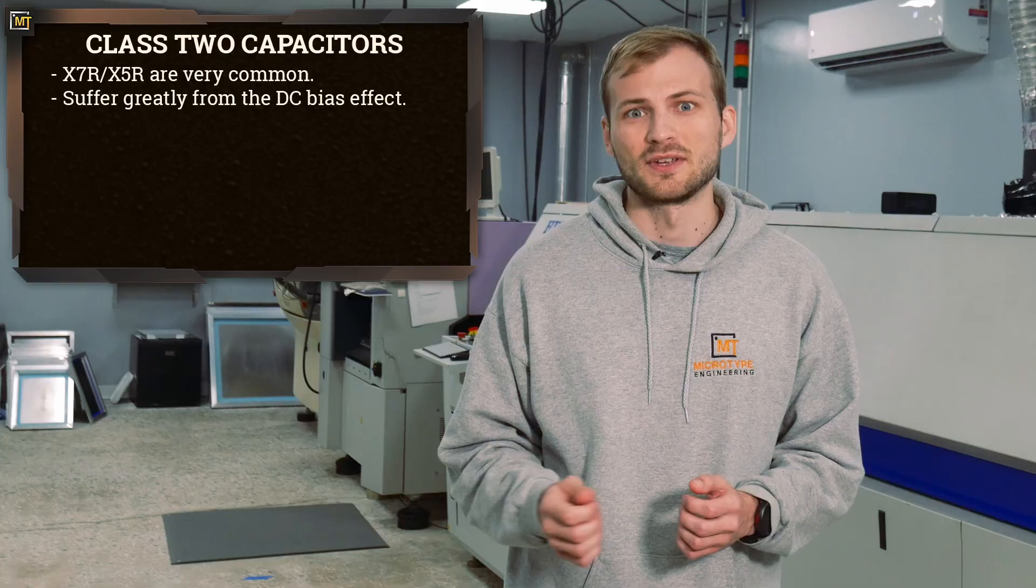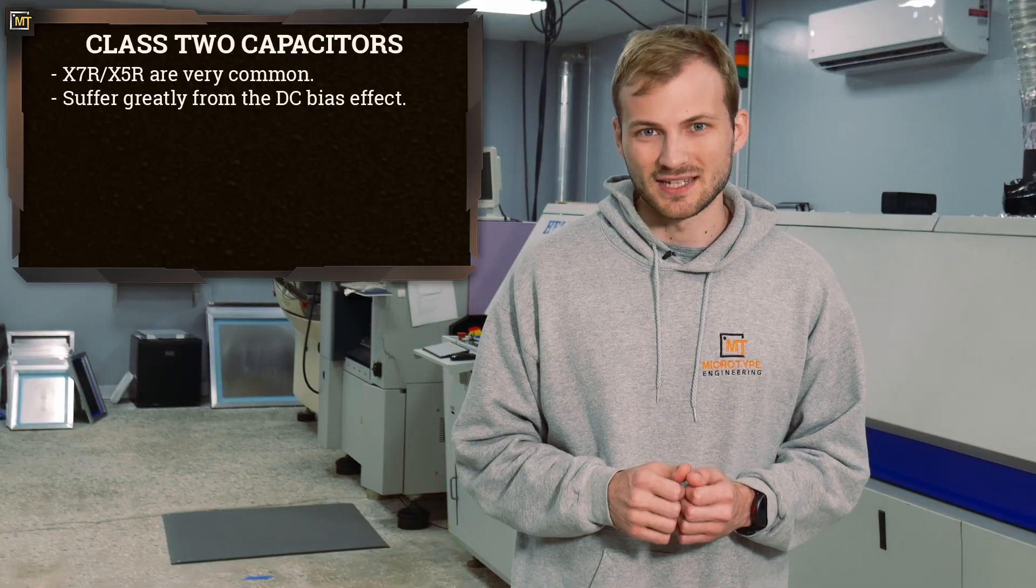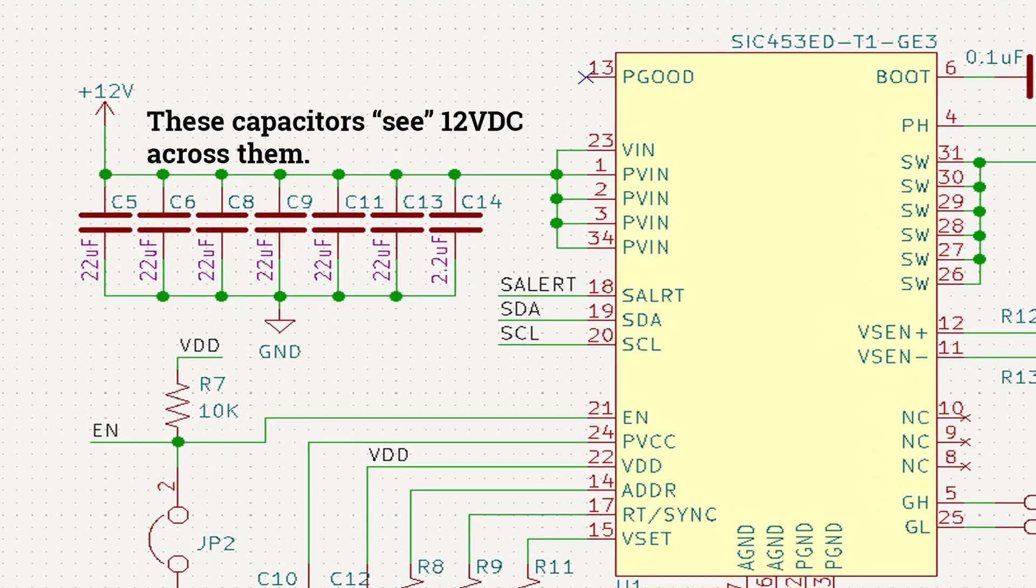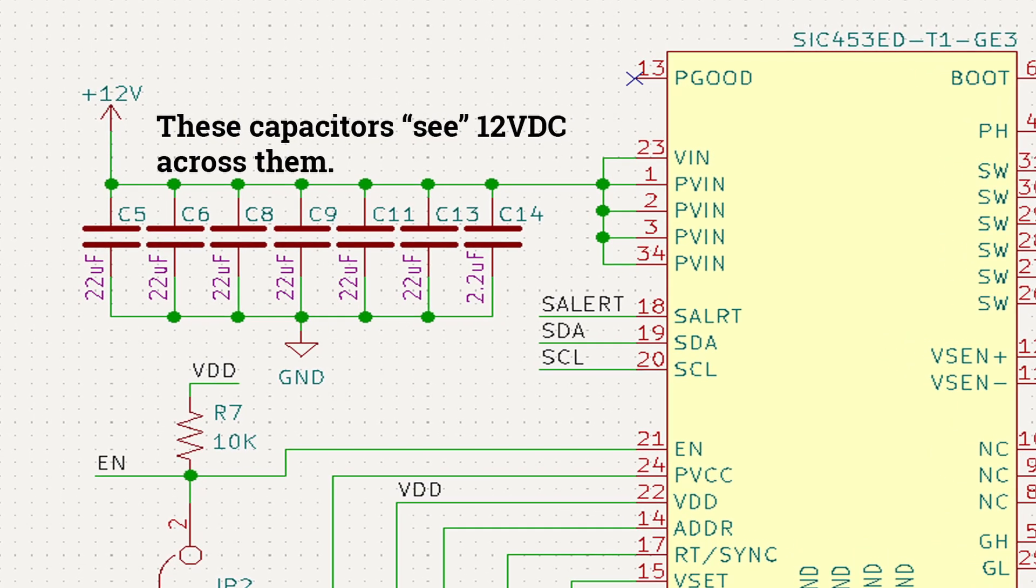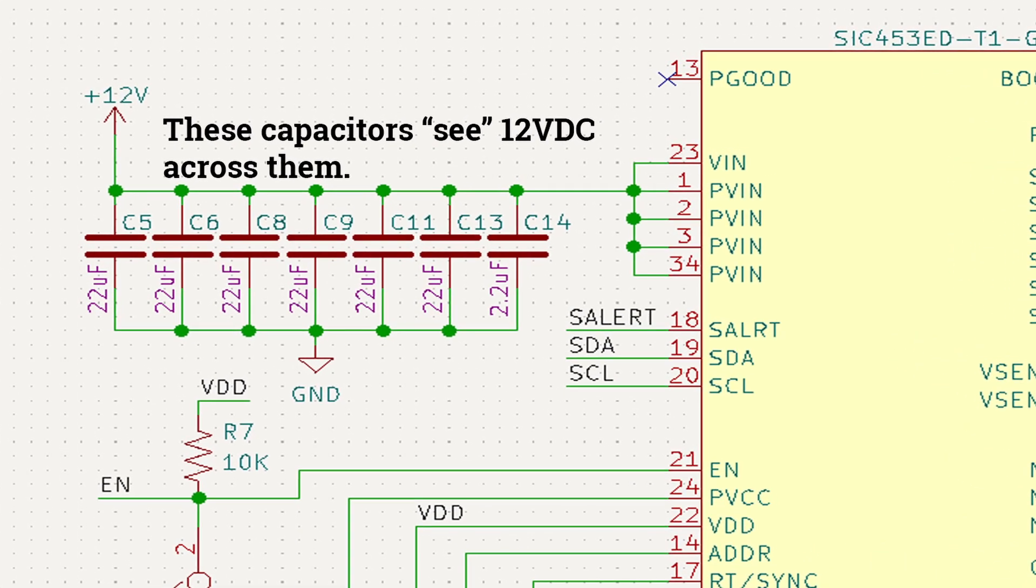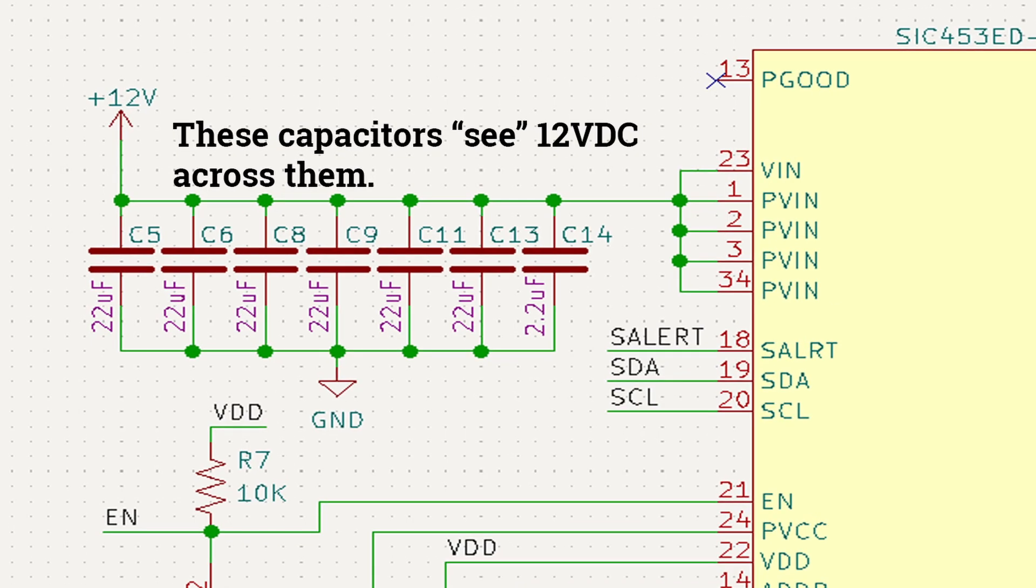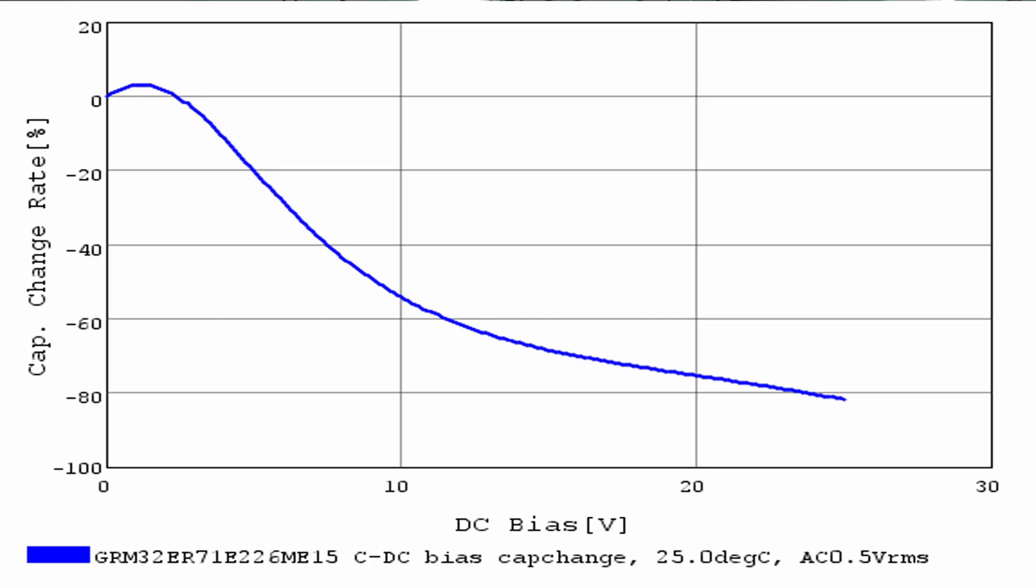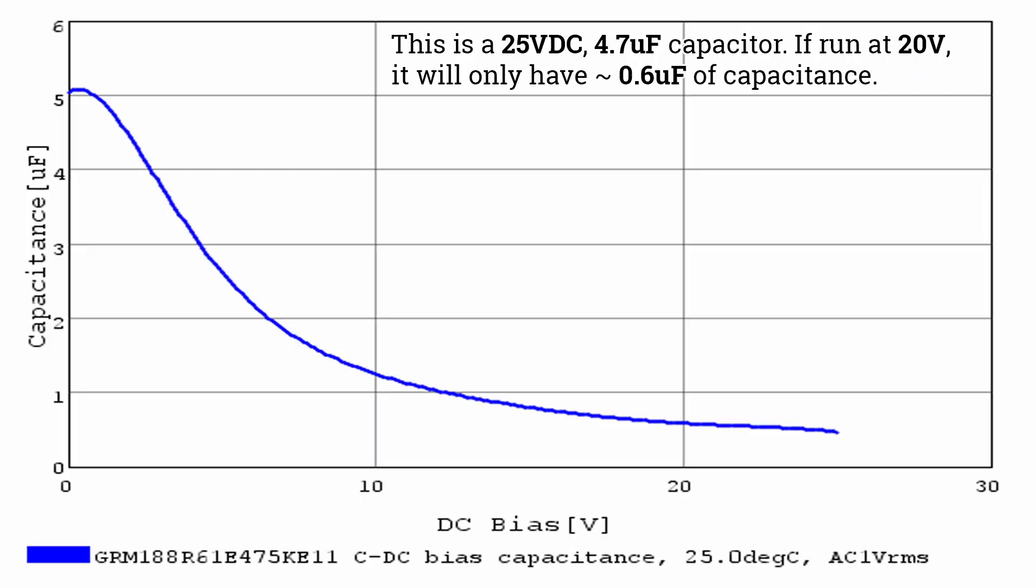The DC bias phenomenon occurs whenever a DC voltage is applied across a capacitor. The capacitance decreases as the voltage increases, and this decrease can be really dramatic, with some capacitors showing over an 80 percent decrease in capacitance while still being within the voltage rating of the capacitor. The fact that the capacitance can decrease so much when it is still being used within the rated operating voltage of the capacitor is why so many people get into trouble.